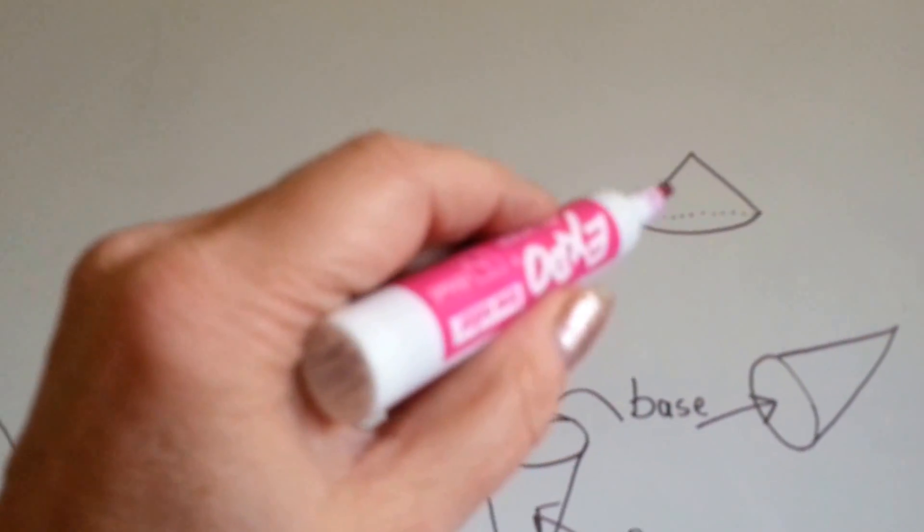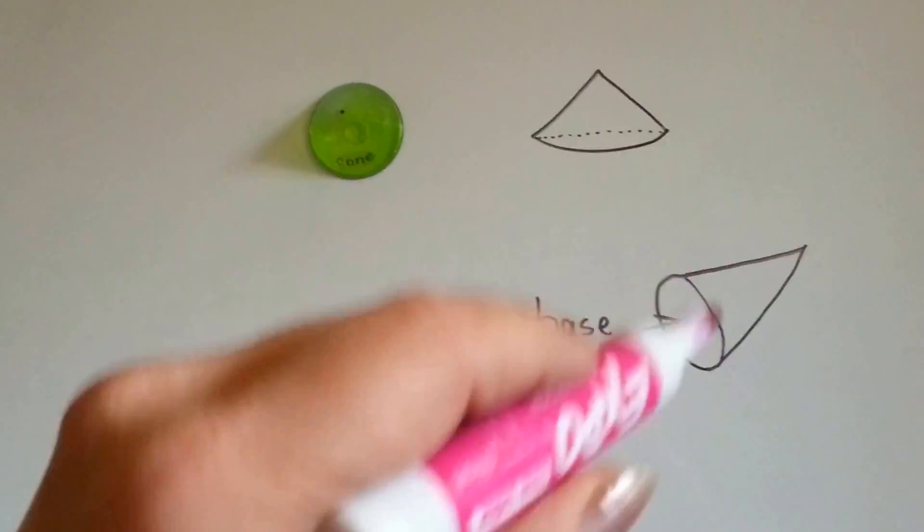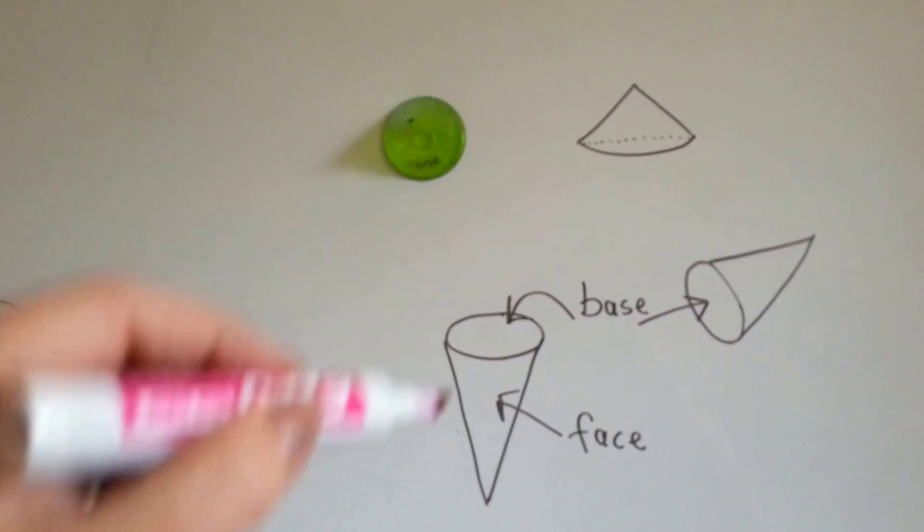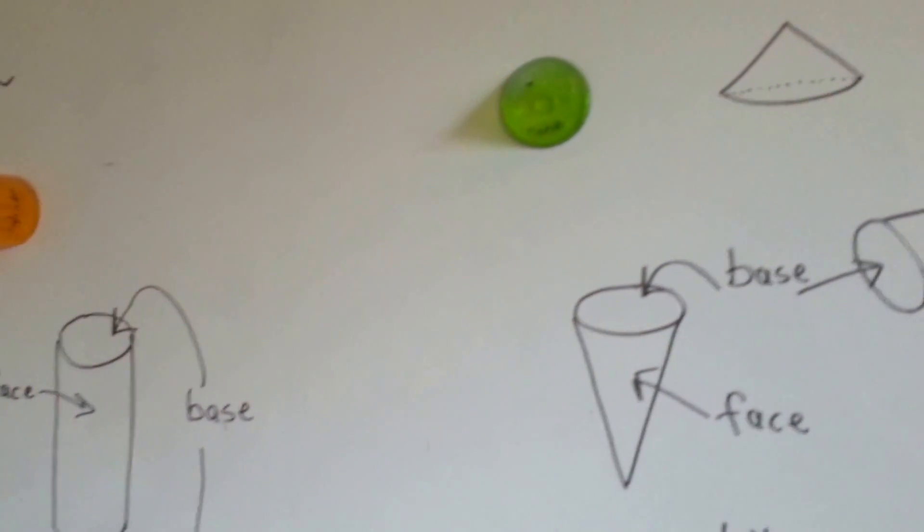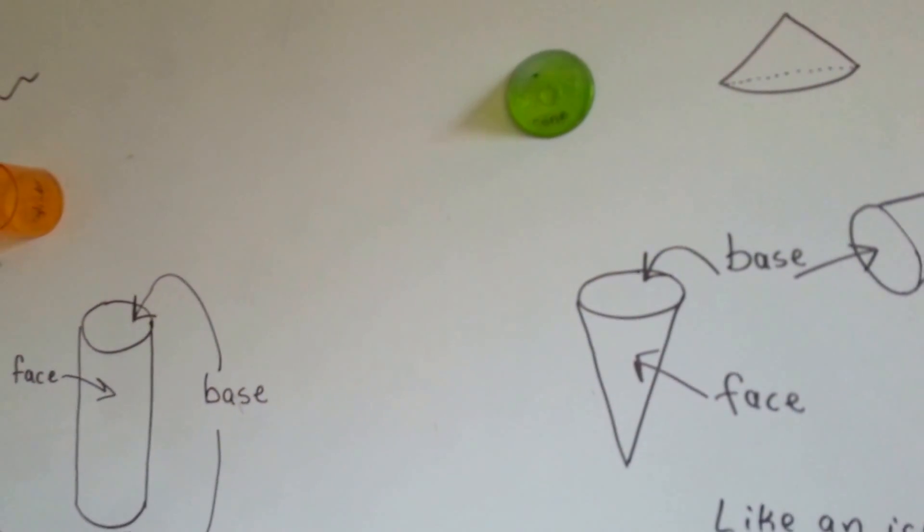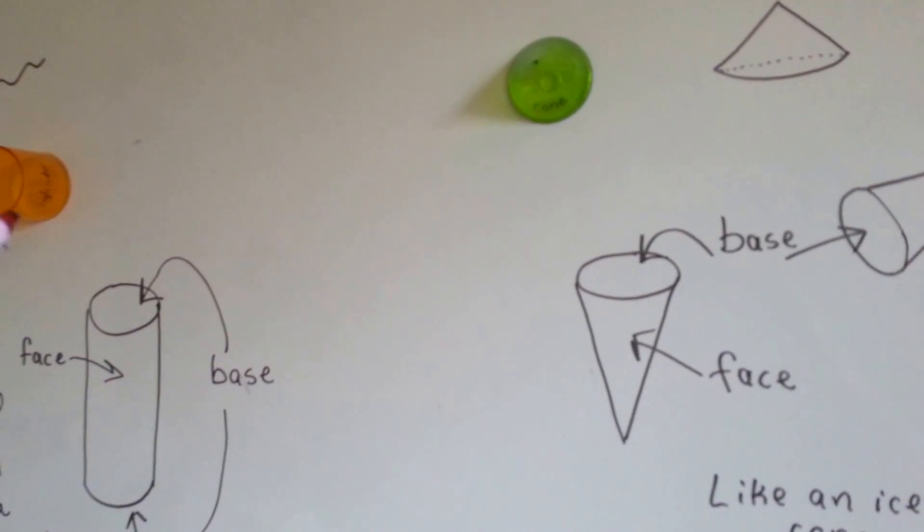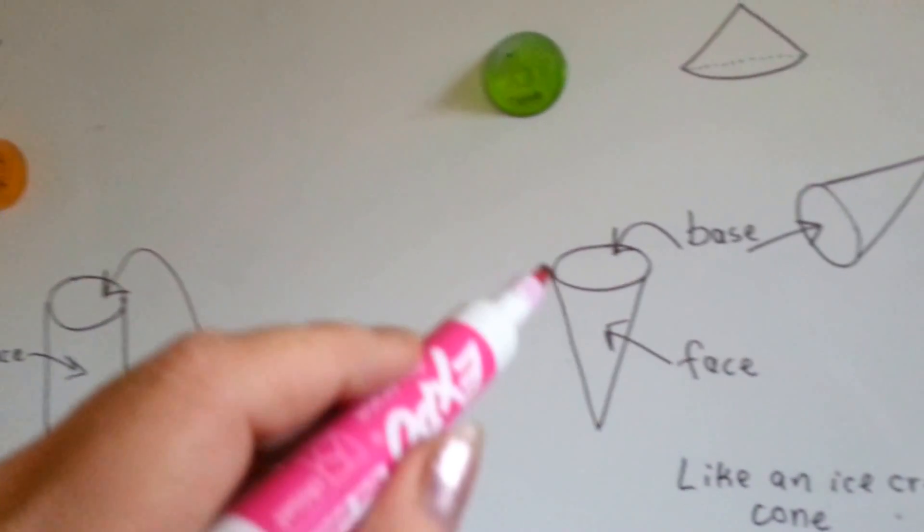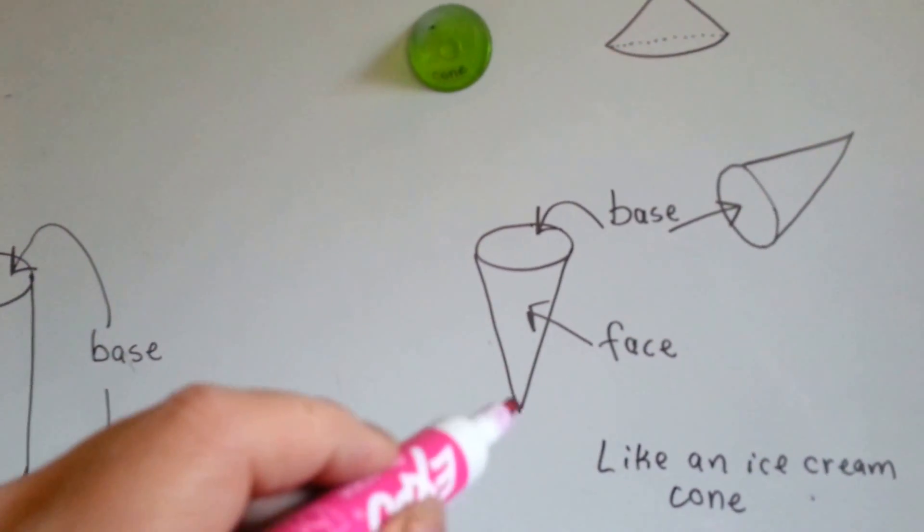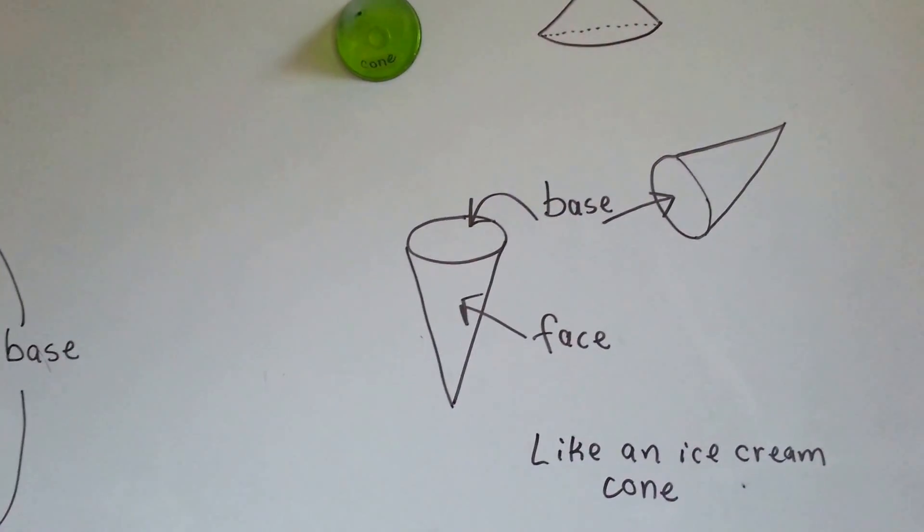So, it doesn't matter which direction it's laying, it's still a cone. And it's got only one base, where this cylinder had two, the top and the bottom. A cone only has one base because the other end comes to a point, like an ice cream cone.